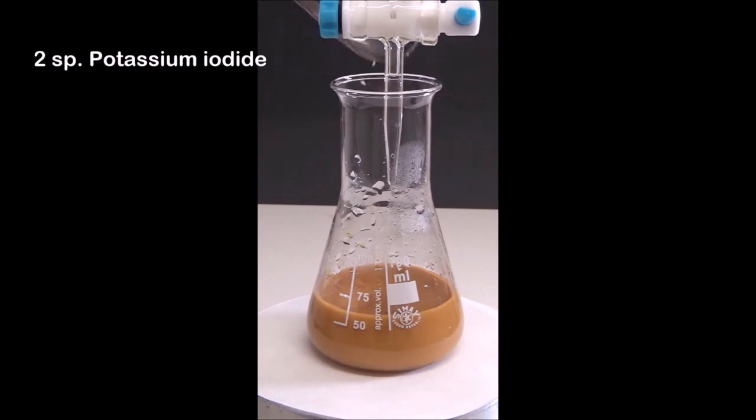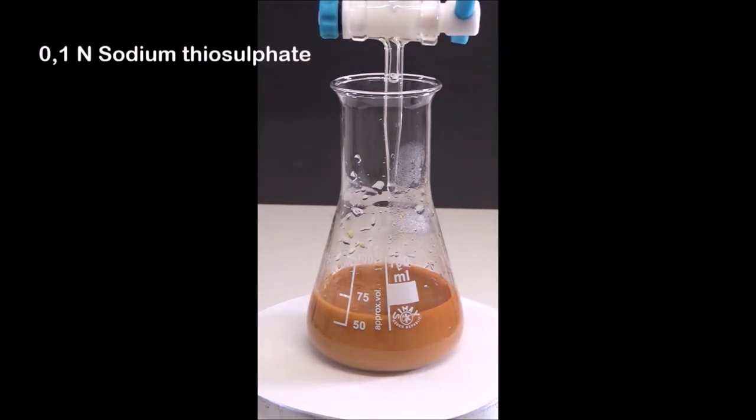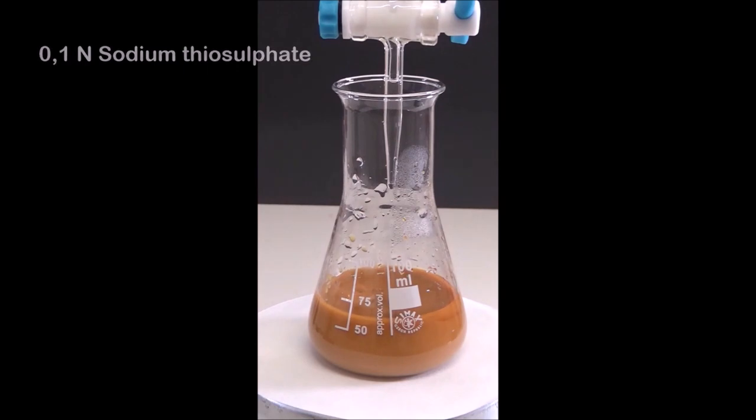The iodide ions are oxidized to brown elemental iodine and, in turn, divalent copper is reduced to monovalent copper, which together with the excess iodide forms a precipitate of white insoluble copper I iodide.